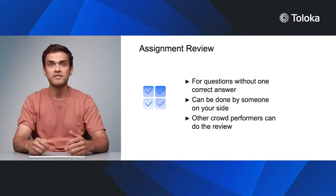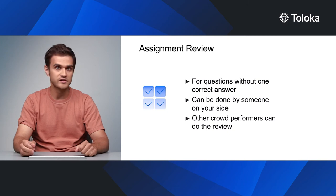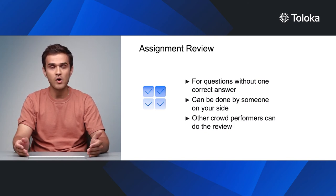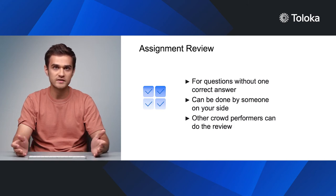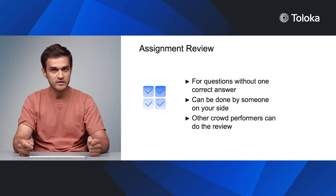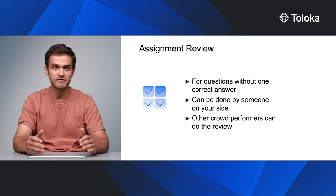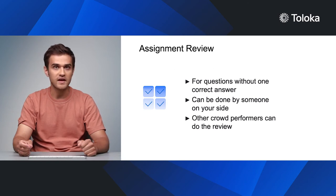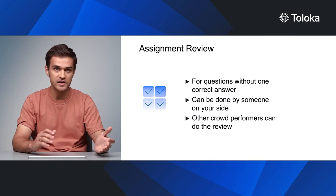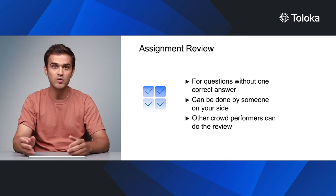But not all crowd tasks are like that. Some demand a creative approach or content processing and can have a variety of correct solutions. Tasks like these can be checked via assignment review. There are two possible ways to review a task. The review can be done by someone on the requester's side — a crowdsourcing platform may even have this option in its UI — but this is only a viable option for very small data volumes or for requesters with unlimited resources. Alternatively, other crowd performers can do the review. First, you create a data labeling project, then in another project you show the labeled data to a different group of performers and ask them whether the tasks were completed correctly. After this verification, incorrectly labeled tasks are sent back for evaluation, performers are paid for tasks that were labeled correctly, and performer quality can be determined.